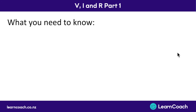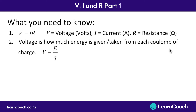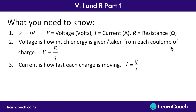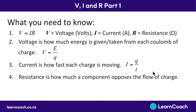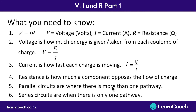Here's what you need to know: V = IR is the most crucial formula, where V is voltage in volts, I is current in amps, and R is resistance in ohms. Voltage is how much energy is given to — or taken away from — each coulomb of charge. Current is how fast each charge is moving, given by I = Q/T. Resistance is how much a component opposes the flow of charge. A parallel circuit is where there is more than one pathway, and a series circuit is where there is only one possible pathway for charges to flow.